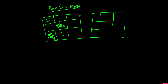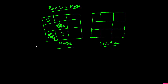Rat in a Maze — this is our maze and this is the solution matrix. This is the source and this is the destination. If you see, the path would be from here to here: go right, right, down, down, and left.